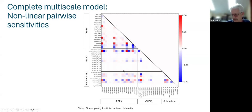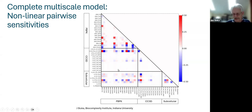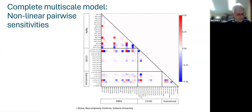This sensitivity analysis also helps identify parameters the model isn't sensitive to, so you can spend less time trying to nail down those values. We're still working on the best way to treat pairwise and even ternary interaction data from this type of analysis.